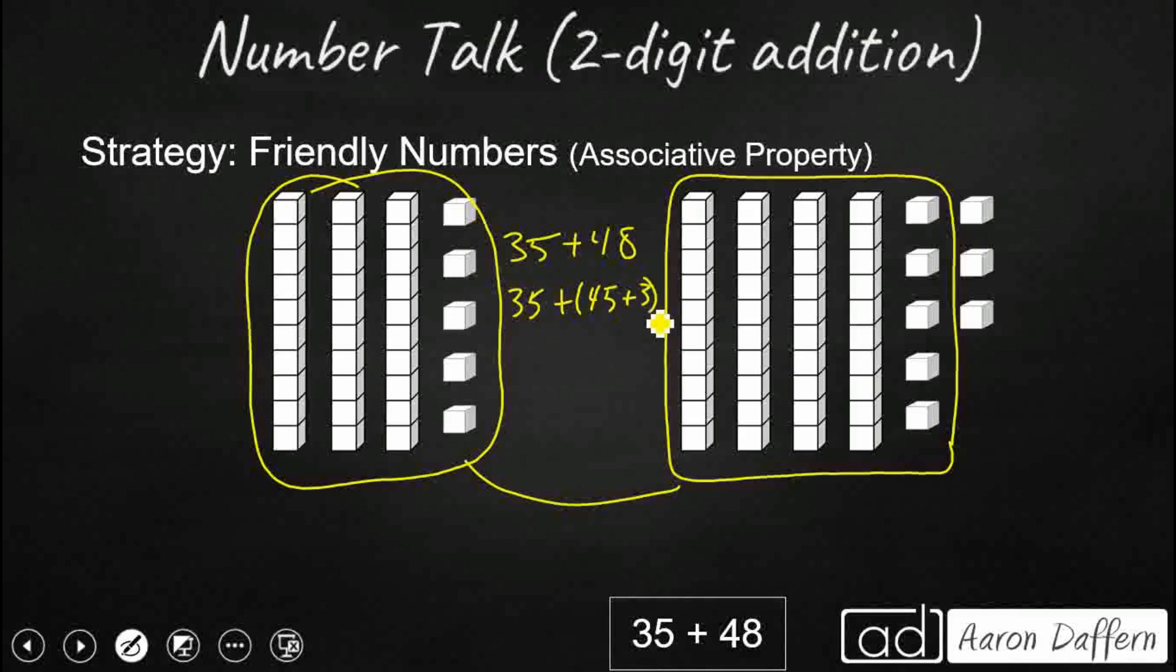And then that three that's left over, we have to still bring that in. So I'm going to bring my associative property into play and regroup these so that my 35 plus 45 gets added first. And that's pretty easy because I've got my 30 and my 40 is 70, five and five is 10. So that's 80. And I've still got my three leftover, but look at that. 80 plus three brings me back up to 83.